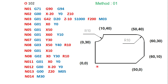To summarize the milling program structure: each straight section uses G01 linear interpolation followed by the end point coordinates. For circular sections, G02 is used for clockwise arcs and G03 for anticlockwise arcs. For clockwise, define G02 with end point coordinates X, Y and radius R. For anticlockwise, use G03 with end point coordinates and radius.